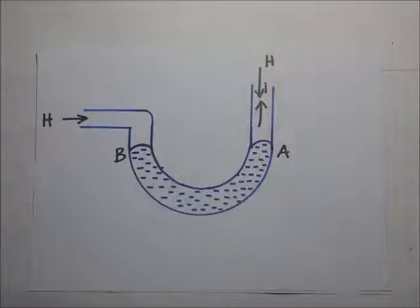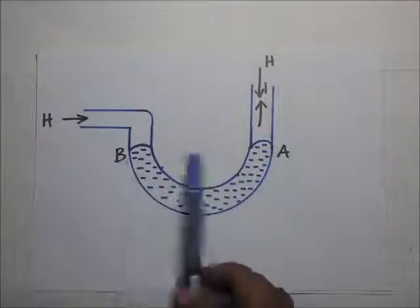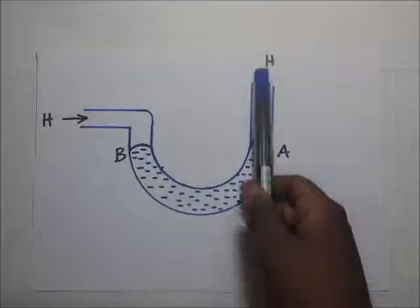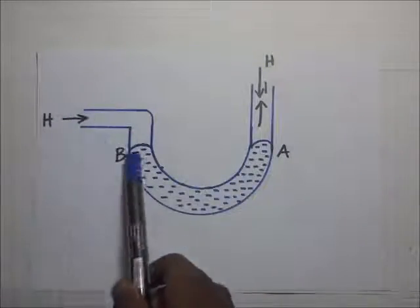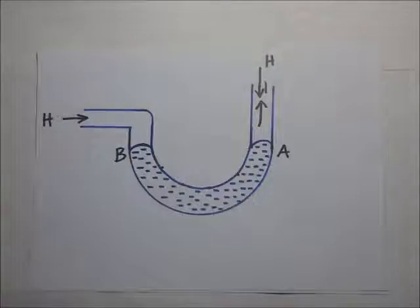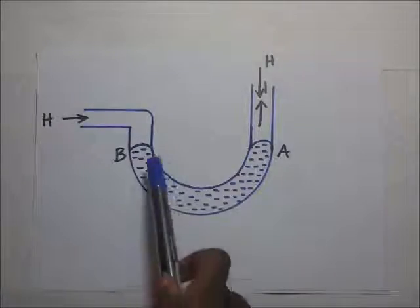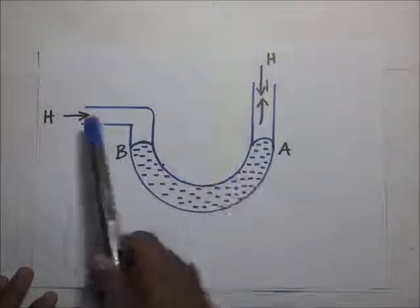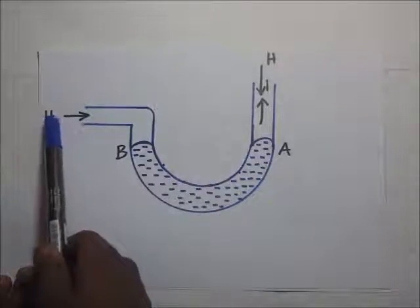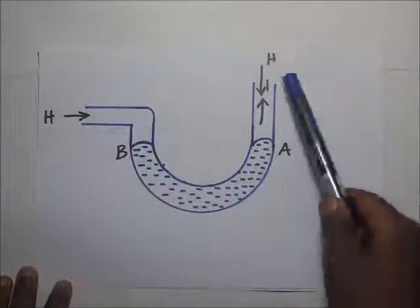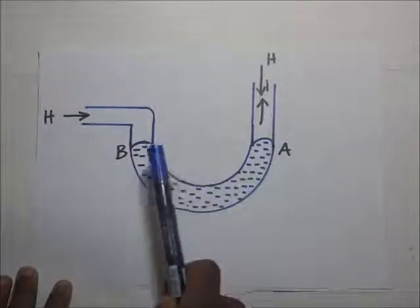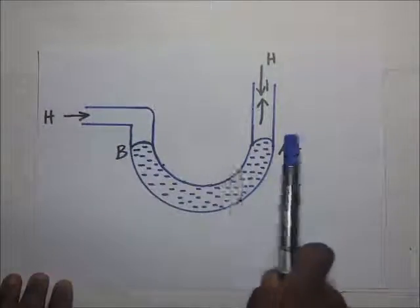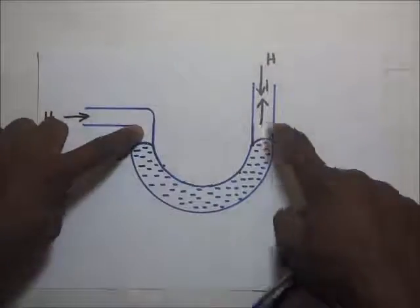We have a diagram of a manometer with both sides — side A and side B. Side A is open and side B is also open. When both sides are open to the atmosphere, the same atmospheric pressure is exerted on the surfaces of both sides. This H represents the atmospheric pressure, which is why the liquid levels on both sides are the same.